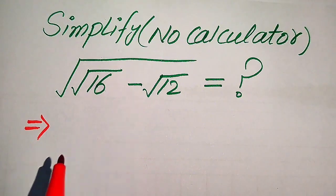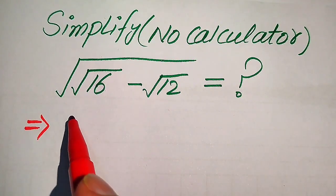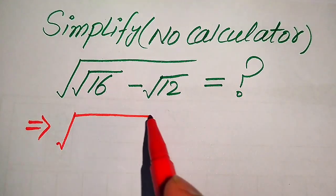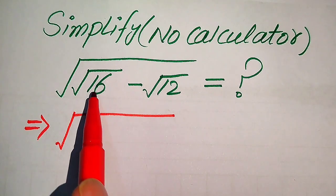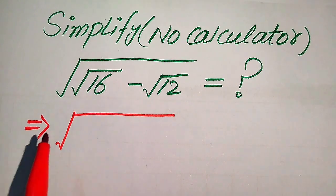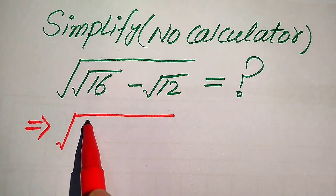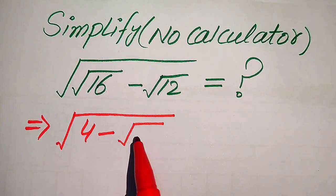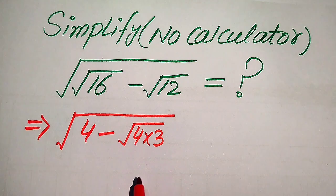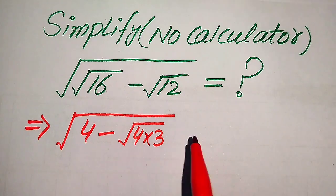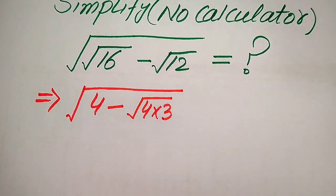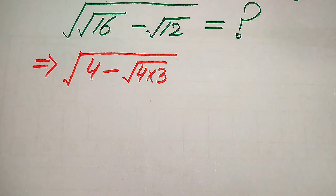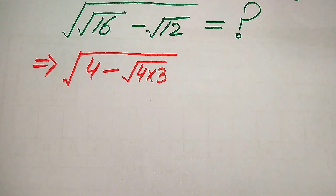The very first thing we do is rewrite the square root of 16, which equals 4. Then we break 12 as 4 times 3 — we know that 4 times 3 equals 12. Now we use the completing the square technique to solve this problem.